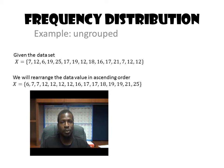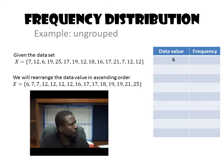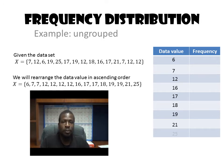Now I'm going to look at each of those values and put them into this table. The first value I see is 6, so I'm going to put 6 in the table. Next value is 7, then we have 12, 16, 17, 18, 19, 21, and 25. So that would be a list of all the values that I see in my data set.